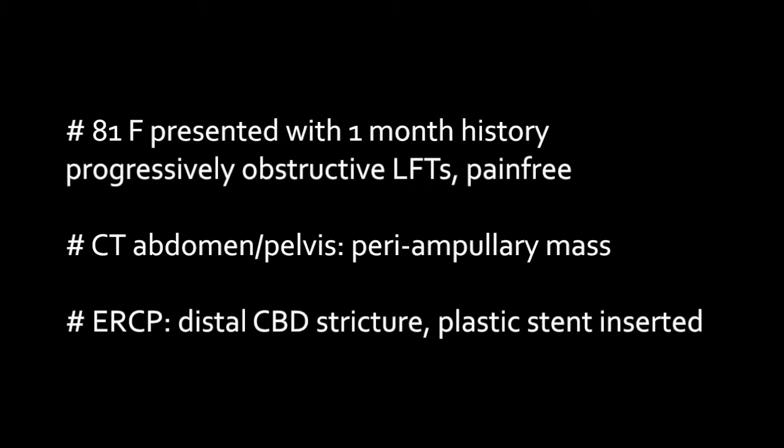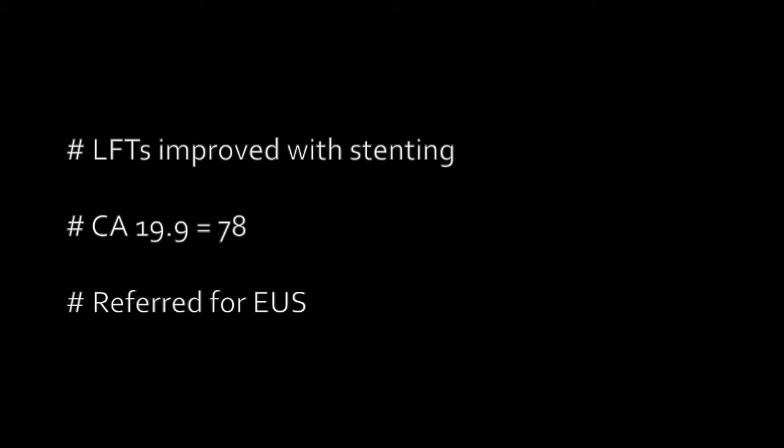An 81-year-old female presented with a one-month history of progressive obstructive liver function tests, with no abdominal pain or loss of weight. CT had been reported as having an ill-defined peri-ampullary mass. The patient had had an ERCP, which showed a distal common bile duct stricture and a plastic stent inserted. The liver function tests improved with stenting, and the CA 19.9 returned at 78. The patient was referred for EUS.